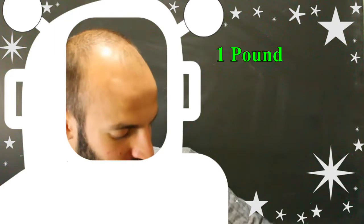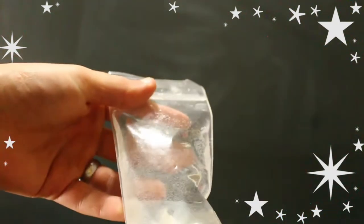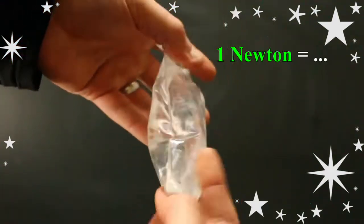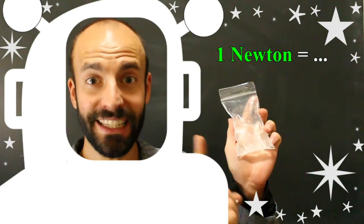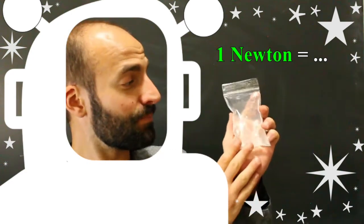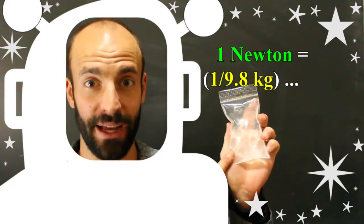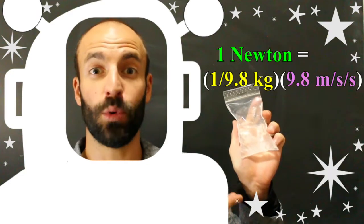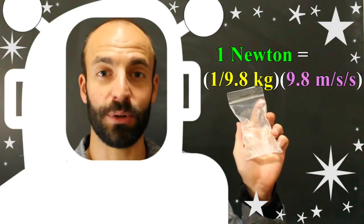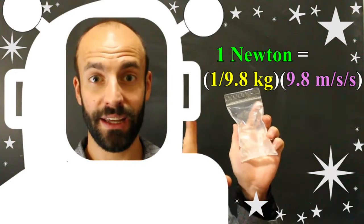Similarly, this on earth would be one newton. So 9.8 of these would have the mass of one kilogram. In space, this is 1/9.8 of a kilogram. And if we were to bring it to earth and multiply it by the 9.8 meters per second per second acceleration due to gravity, we would get one newton.